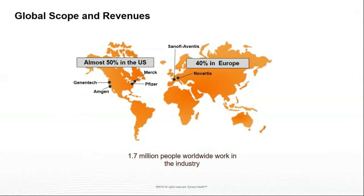The pharmaceutical industry is really quite a vast network of companies. About 50 percent of global pharmaceutical companies are located in the United States and about 40 percent are located in Western Europe, with the other 10 percent scattered about the world. These are just a few of the major players: companies like Genentech, Amgen, Merck, Pfizer, Sanofi-Aventis, and Novartis really make up a lot of the big players in that space.